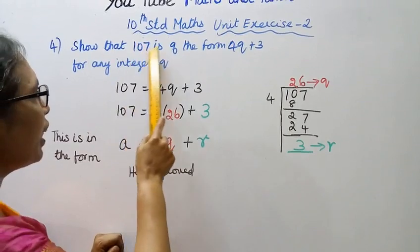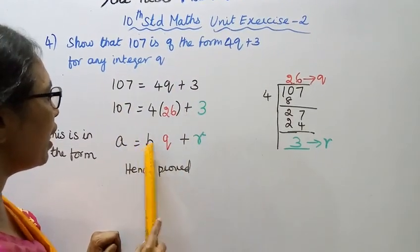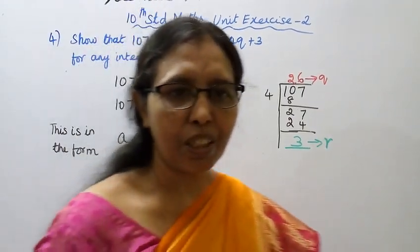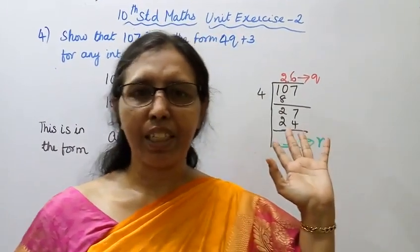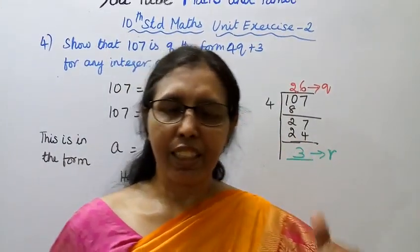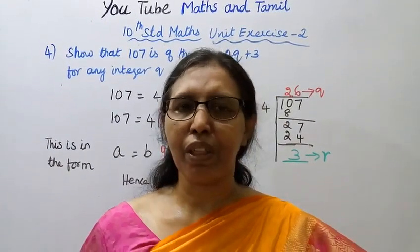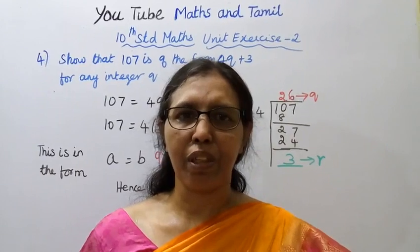So we have shown that 107 is in the form of A equal to BQ plus R. So we have done the proof. This is 2 marks question. Okay students, this channel helps you to get 100 marks in Maths.